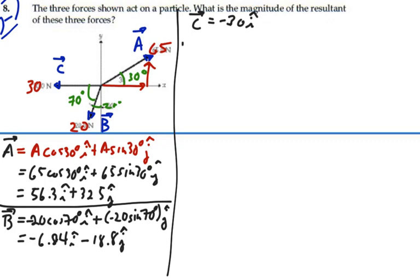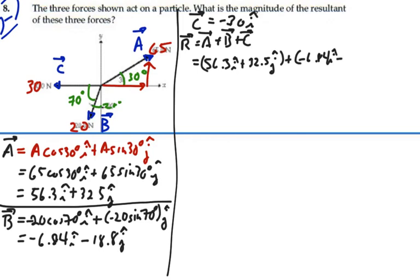Okay, so our resultant is going to be A plus B plus C, and that's going to be equal to, let's put it down here, 56.3 I plus 32.5 J for vector A. And then we're going to add B to that, which is going to be a negative 6.84 I minus 18.8 J.